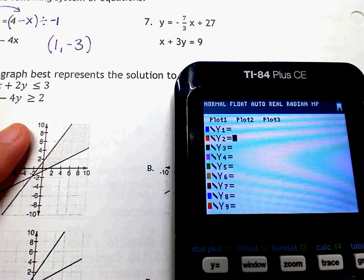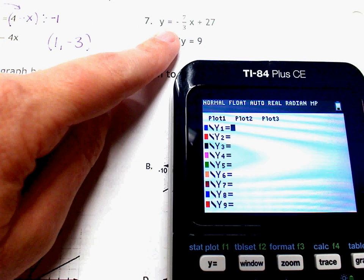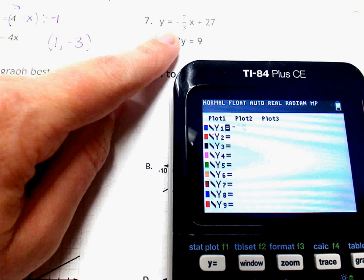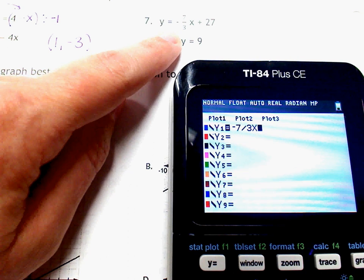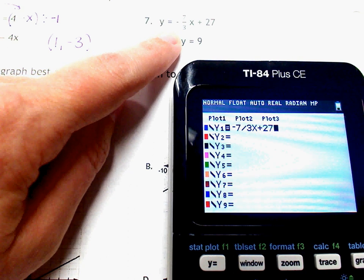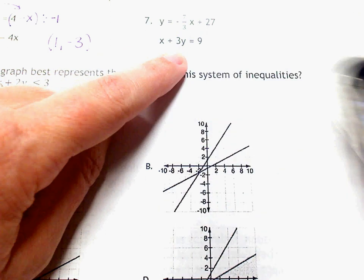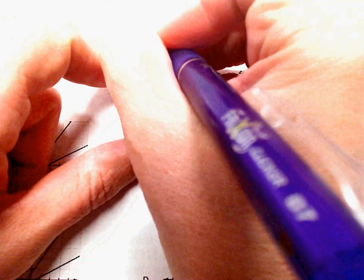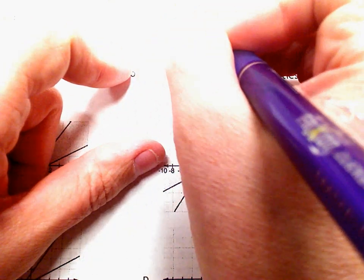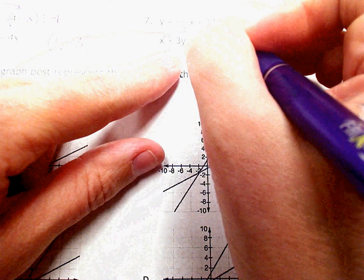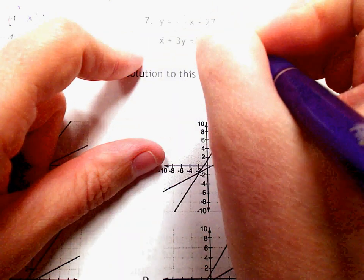For number 7, the first one's already in y equals. So I'm just going to have to type that in. Negative 7 over 3x plus 27. And then the next line, we're going to have to redo this one. So we'll put the parentheses here. The opposite of x would be negative, so that would be minus x. And then we're going to divide by positive 3 because that's what's in front of y.